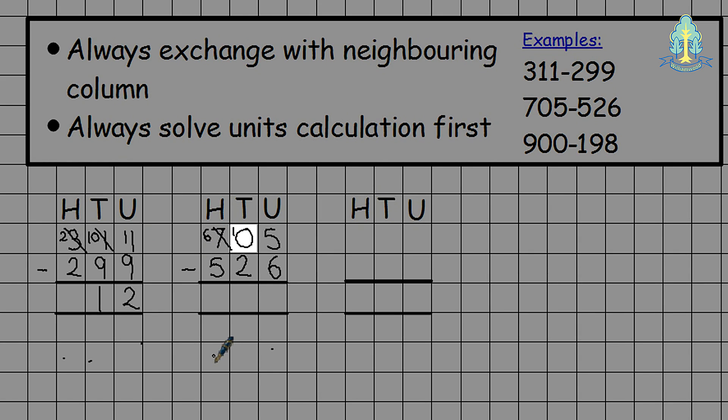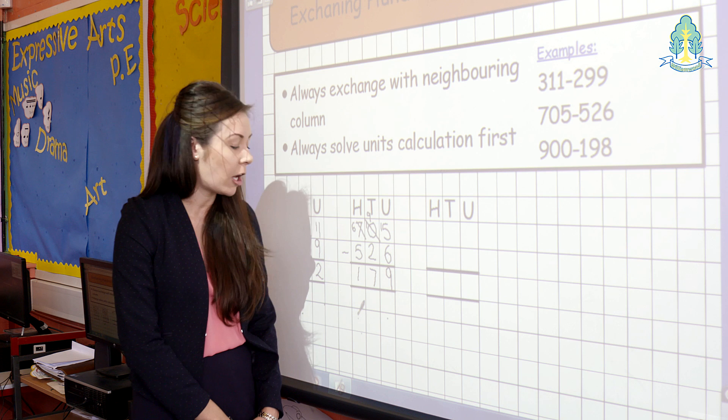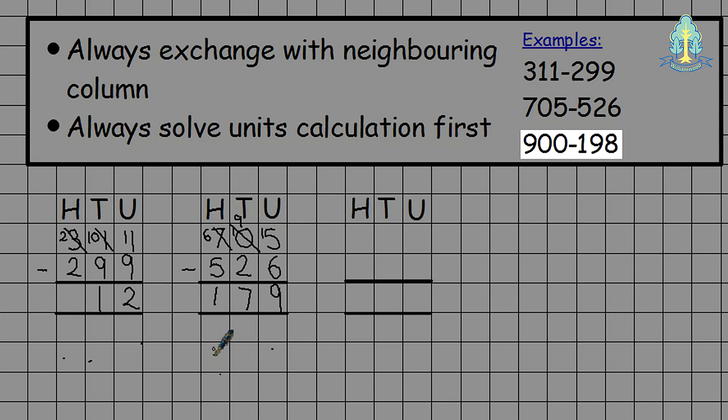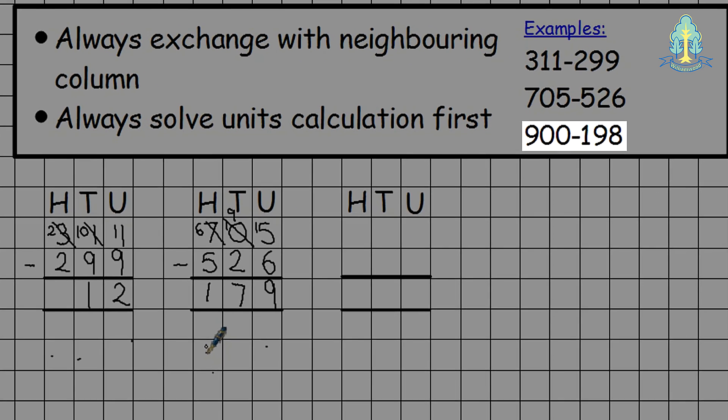Pupils are always working towards answering the units first therefore they will exchange from the tens now. This becomes 9 tens giving 15 units. 15 take away 6 is 9. 9 take away 2 is 7. 6 take away 5 is 1 giving them the answer of 179.